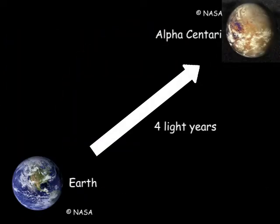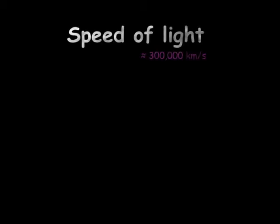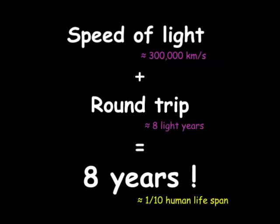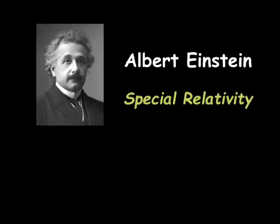The distance from Earth to the nearest star is about 4 light years, which means even if you travel at speed of light, 300,000 km per second, it would take a whole 8 years for a round trip. Could you imagine taking a tenth of your life for just a trip?